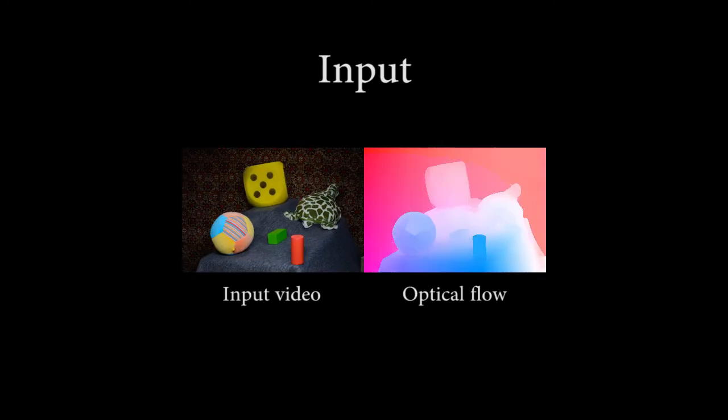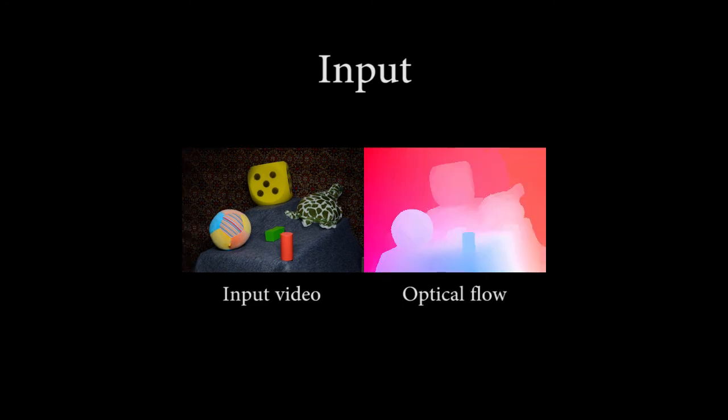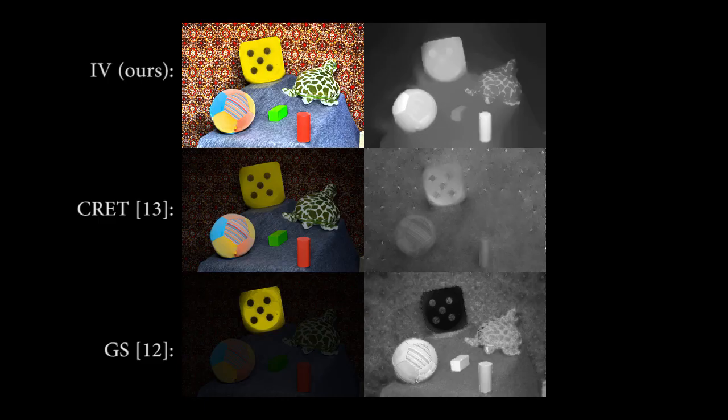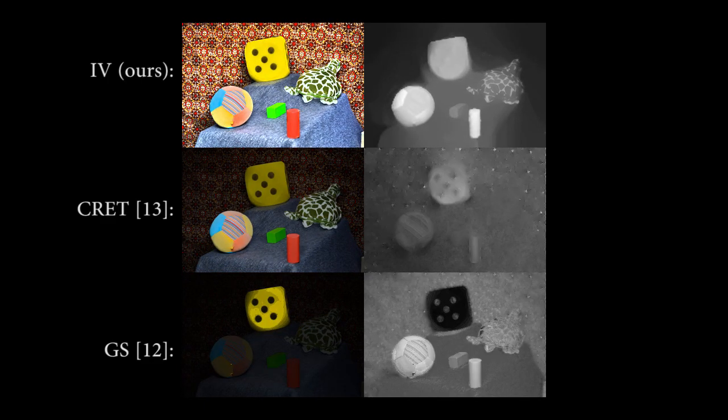In this example, we introduce slowly varying illumination by mounting a continuous light source on top of the moving camera. Our method again significantly outperforms previous ones.